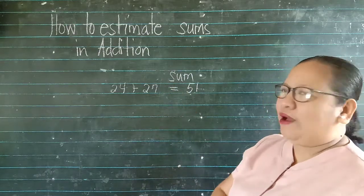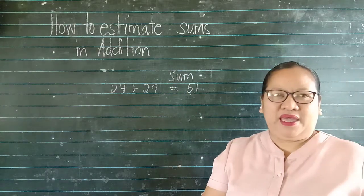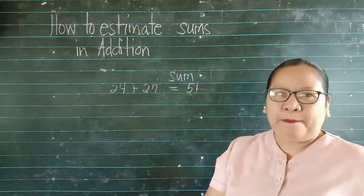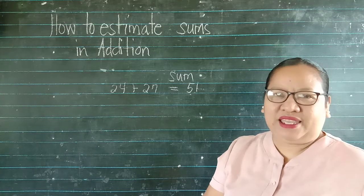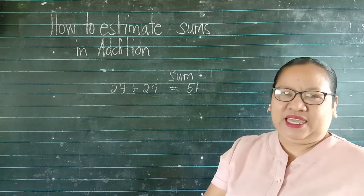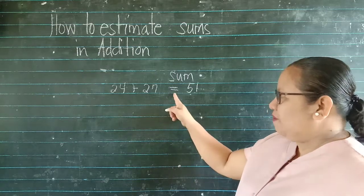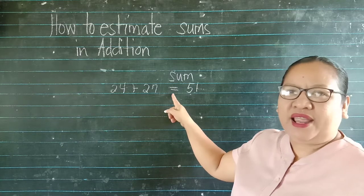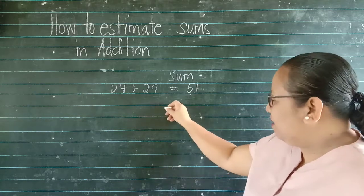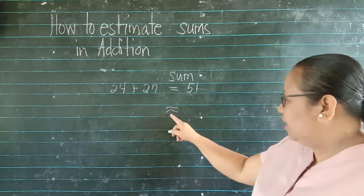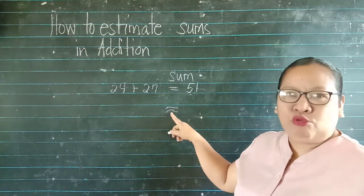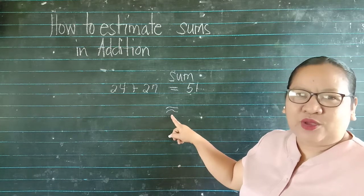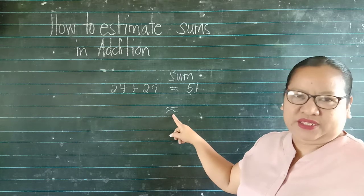Next word we have estimate. When we say estimate, hindi po siya eksaktong sagot. Approximate lang o estimated lang. In addition, this symbol, the equal sign, is used for an exact answer. Ang simbol sa estimation ay ganito po siya. Para siyang uod, hindi po siya straight. Yun po ang ginagamit kapag tayo ay nag-estimate ng numbers.